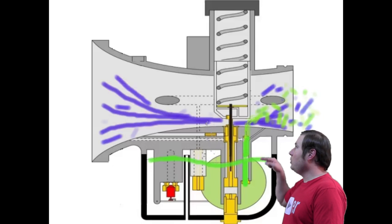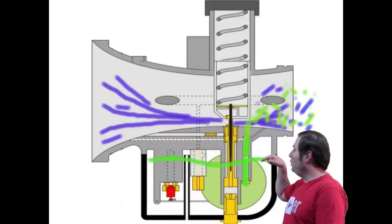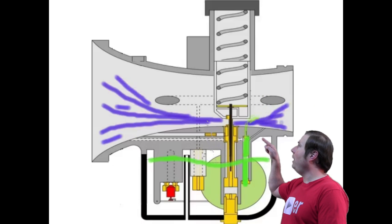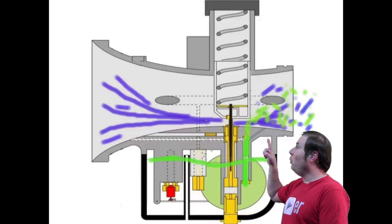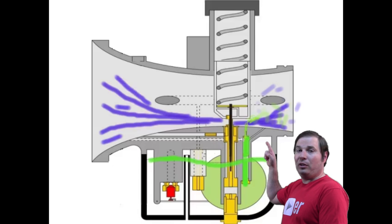As you can see now, the carburetor slide is starting to open to allow fuel through the throat of the carburetor to pull the fuel through the pilot jet out the pilot orifice to mix in the throat of the carburetor.